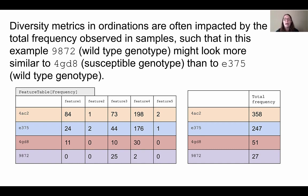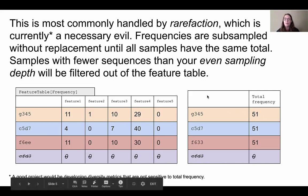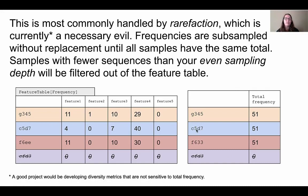How might we fix this? We can standardize our samples, and one way to do this is called rarefaction, where we randomly pick observations without replacement from our samples up to a specific depth. Here we chose 51, which produces a new feature table with a new set of randomly chosen observations from each sample.